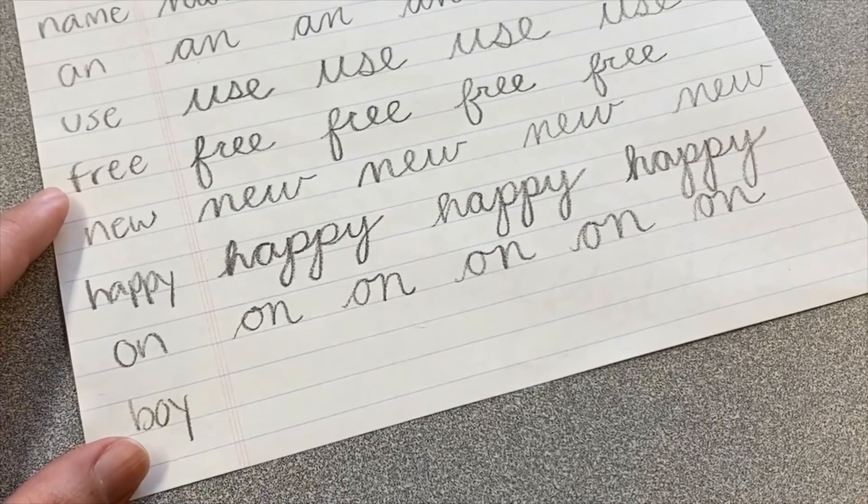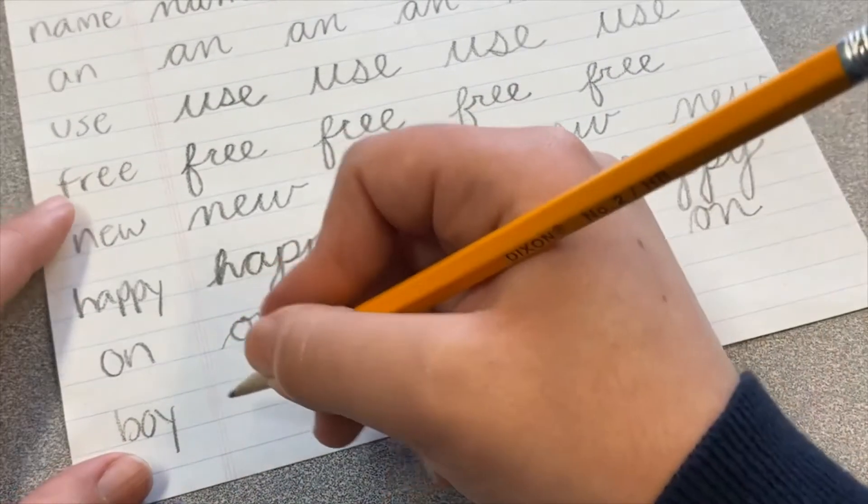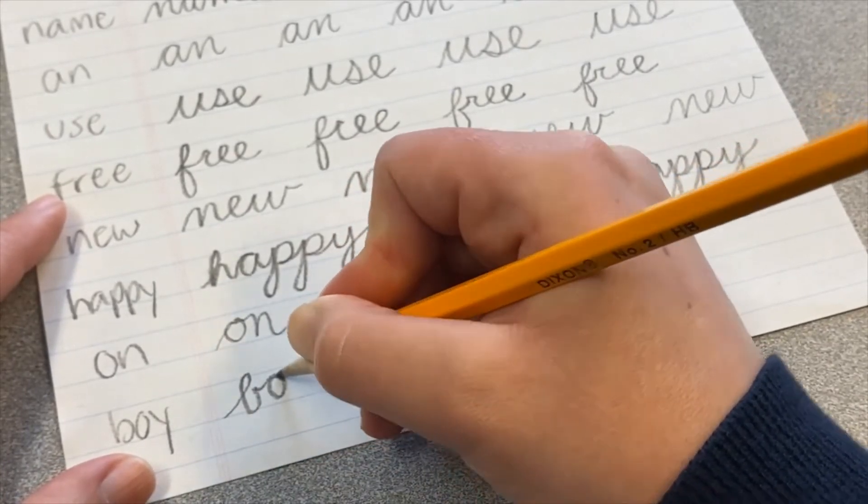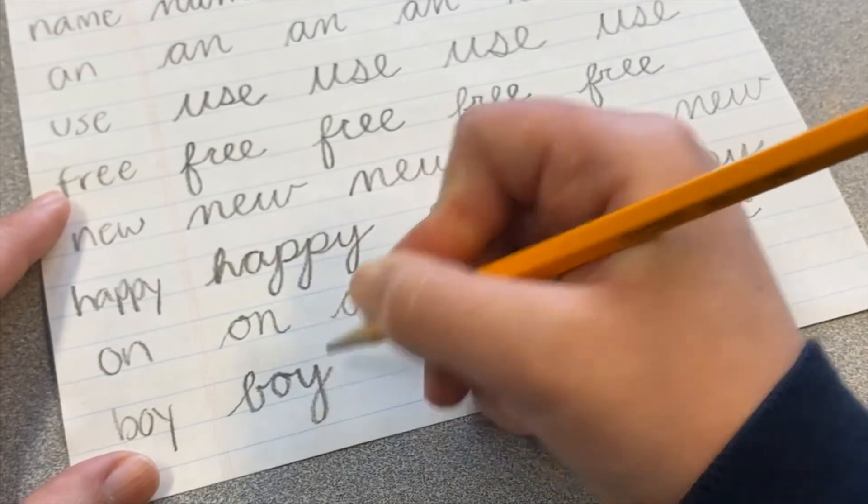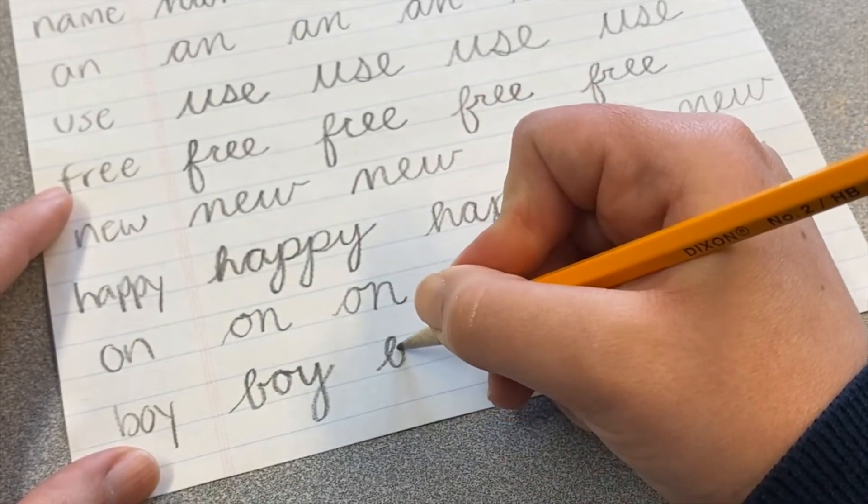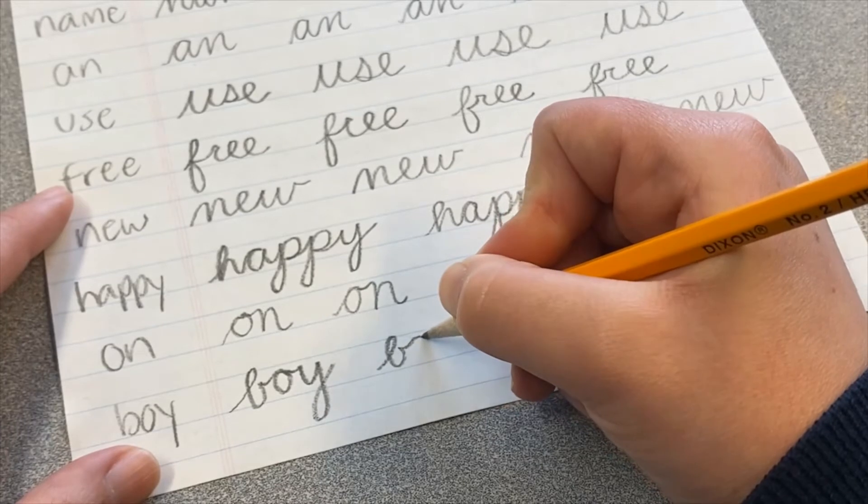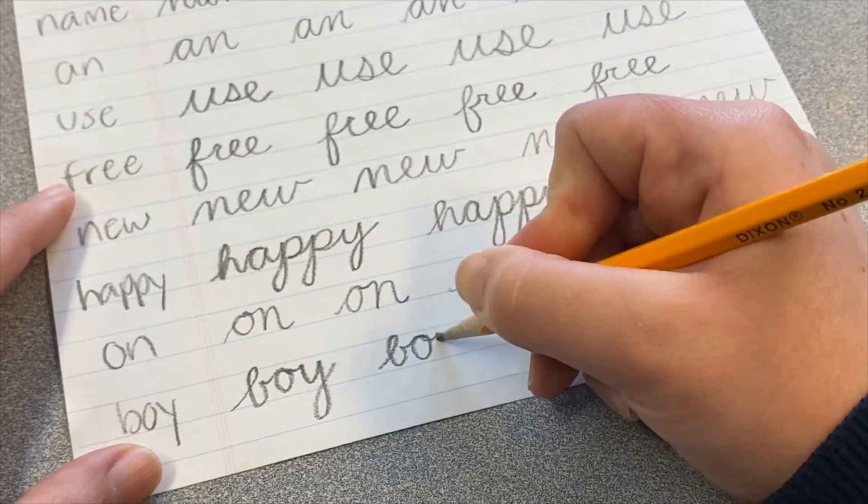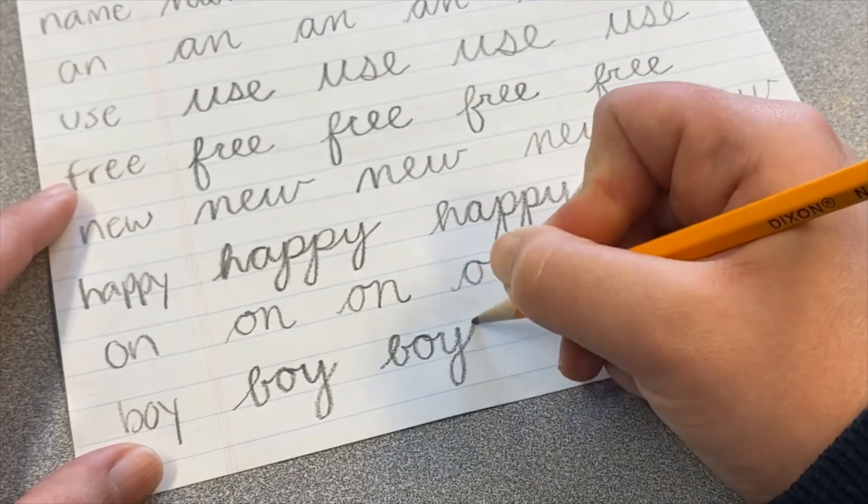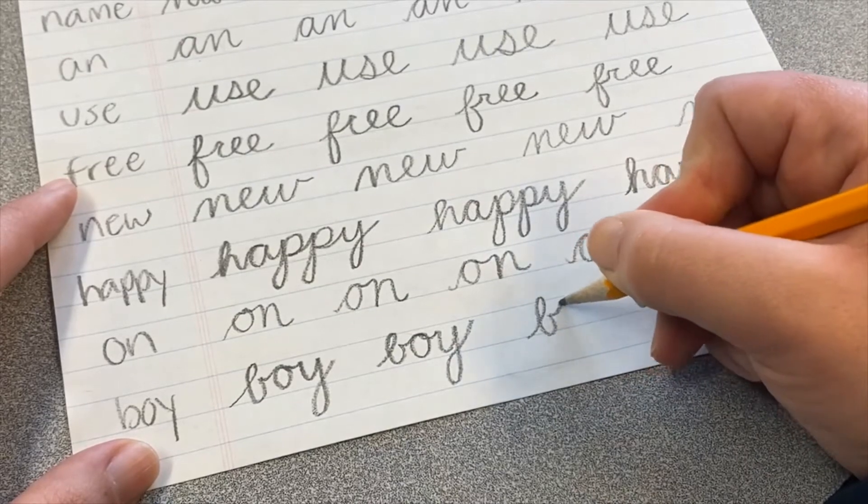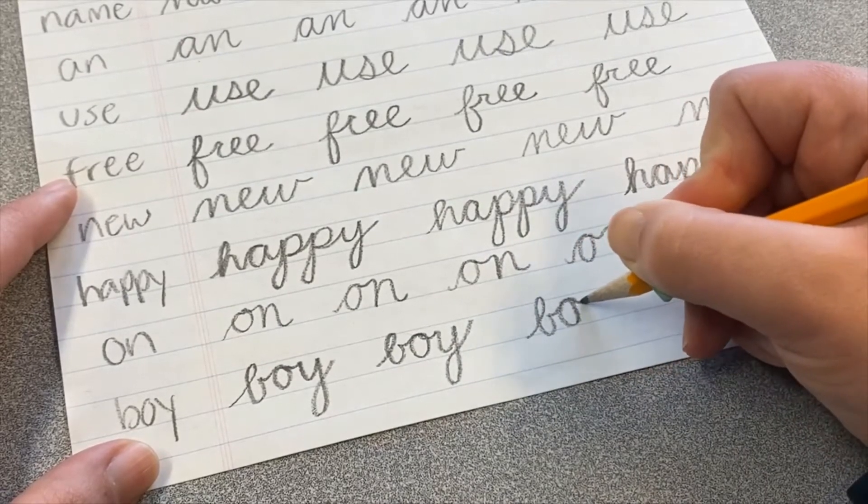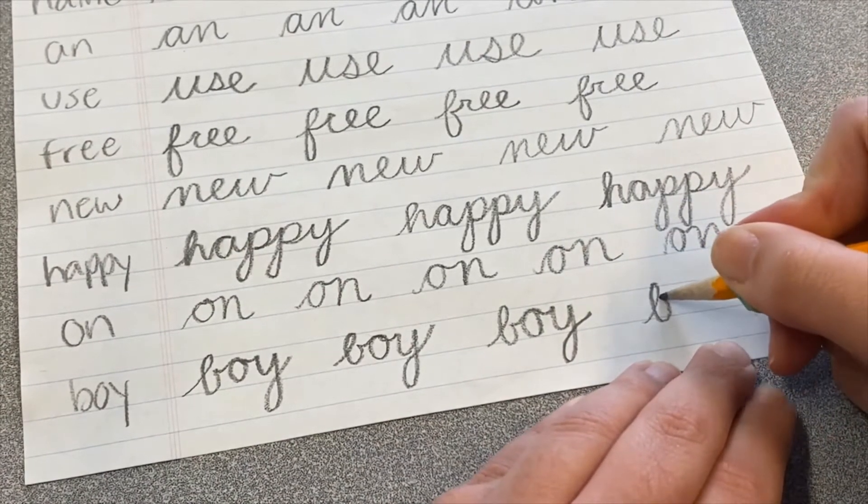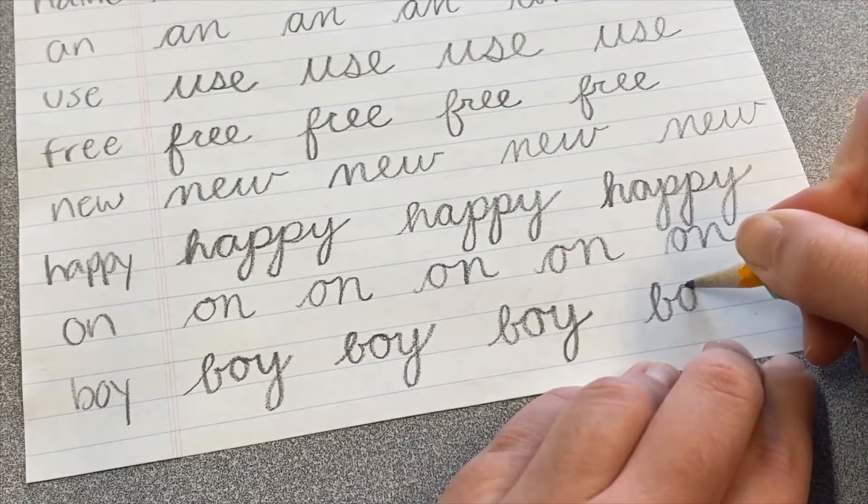The last word for this page is the word boy. B, O, Y. So we have our B, our O, and our Y. B goes in, out, over to make the O. And loops in, and goes over to make the Y. And in and out, B, over, over. And one more B, O, Y.